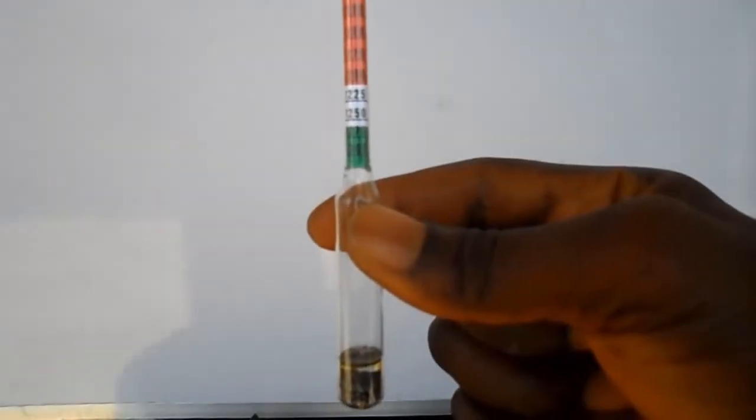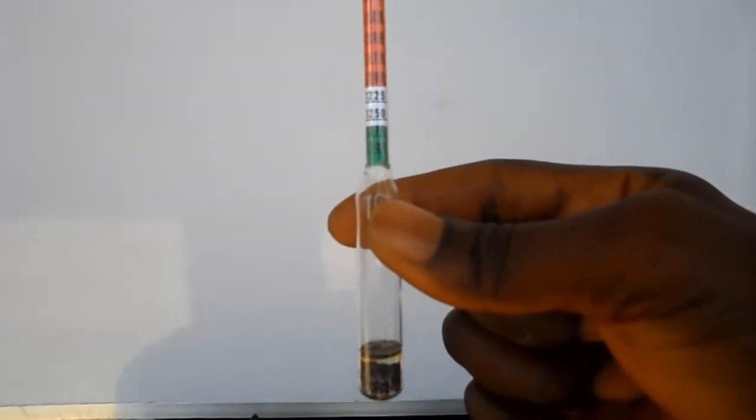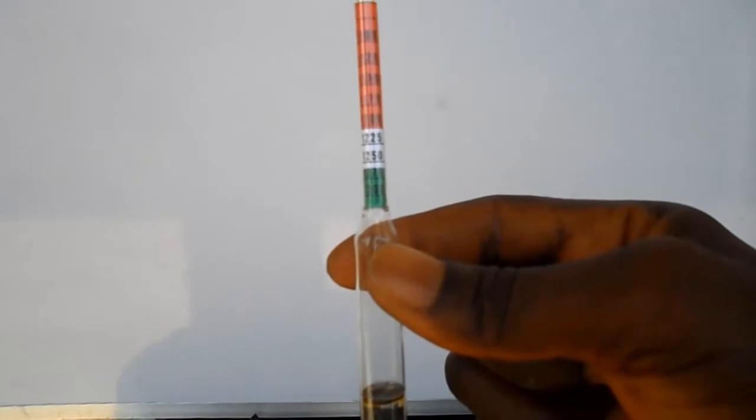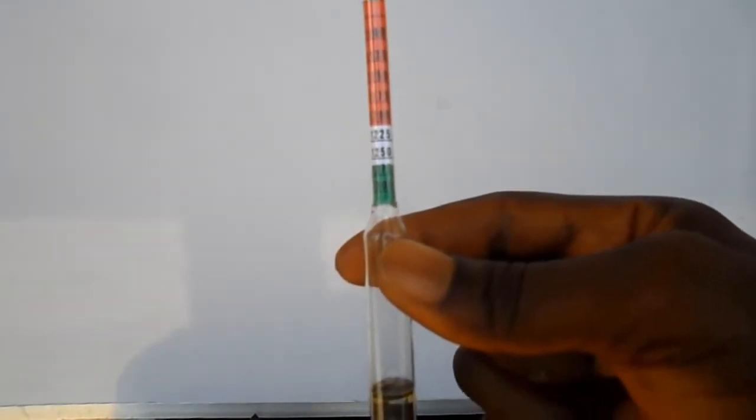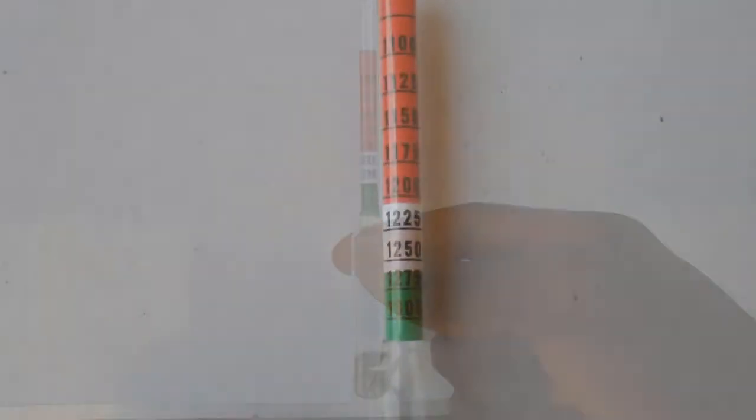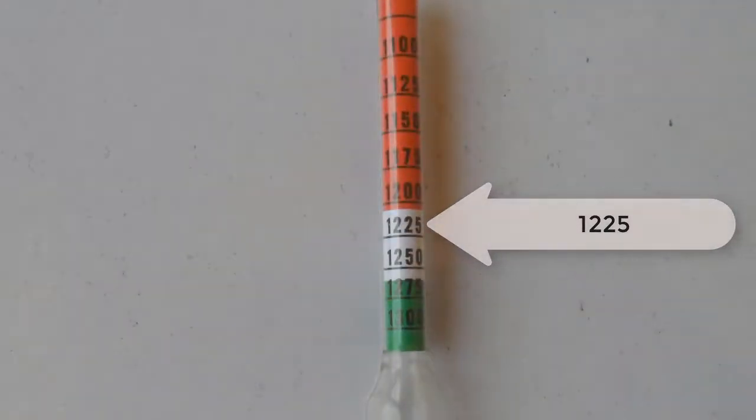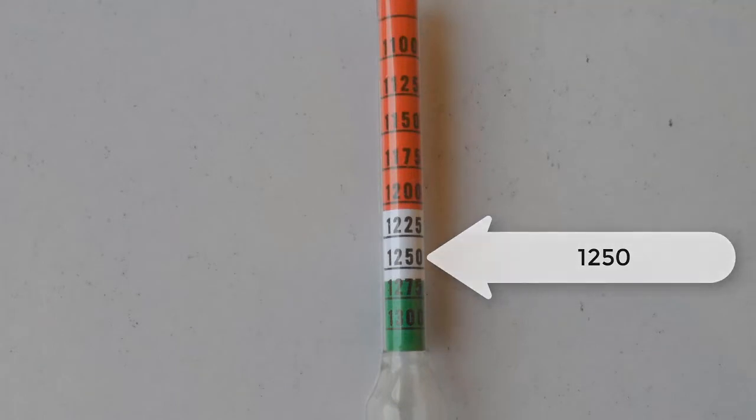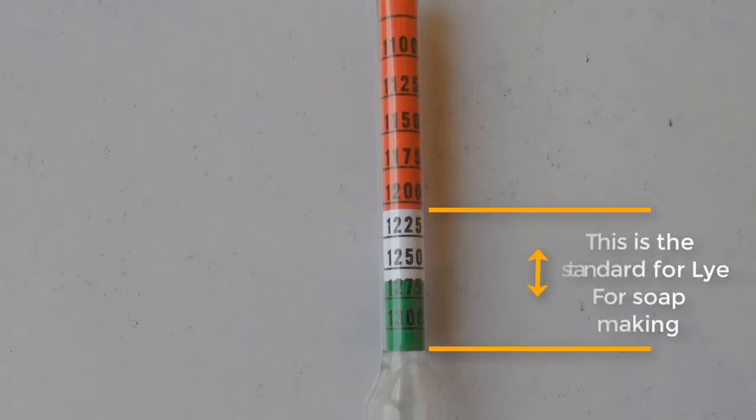The color coded hydrometer is calibrated with three different colors: these are red which is at the top, this is then followed by white which is at the middle, and green color which is at the bottom. The white calibration starts with 1225 and ends with 1250, while the green calibration starts with 1275 and ends with 1300. Just like I said earlier, the standard for soda for soap making is between the white and the green color.